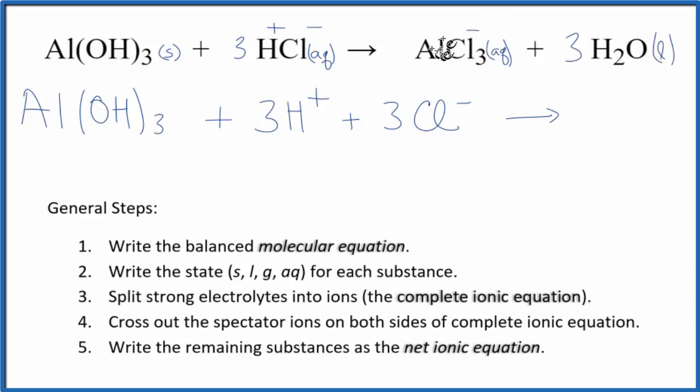For the products, chlorine, that's a one minus, and aluminum, that's a three plus. So we can split this apart into Al, three plus, plus we have the three chlorine atoms. So three chloride ions is what we end up with. And then we have the three water molecules. So this is our complete ionic equation.